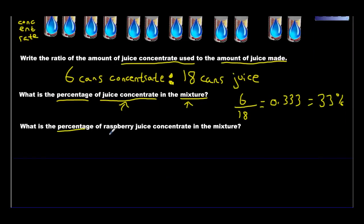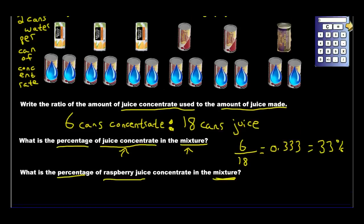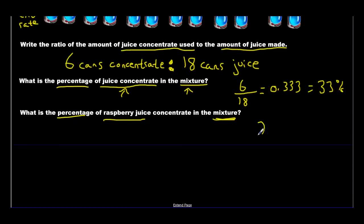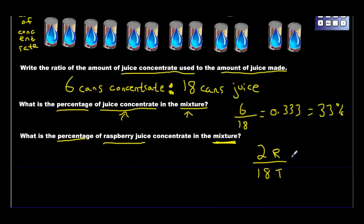Now what is the percentage of raspberry juice concentrate in the mixture? We have two cans of raspberry juice, so we'll write 2 raspberry. The mixture is the total, so we have 18 cans. What's 2 divided by 18? If you punch it in your calculator, you're going to get 0.11111 forever, and that's going to become 11%.